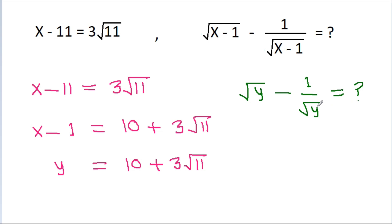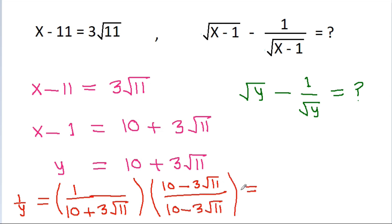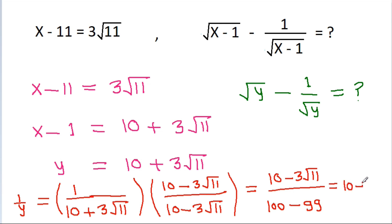We have to find the value of root y minus 1 by root y, and y is equal to 10 plus 3 root 11. To find 1 by y, it will be 1 by 10 plus 3 root 11. If we rationalize it, we multiply by 10 minus 3 root 11 over 10 minus 3 root 11, and we get 10 minus 3 root 11 over 100 minus 99, which gives 10 minus 3 root 11.